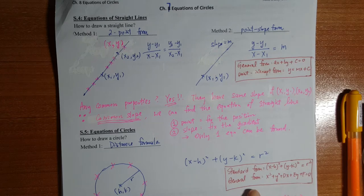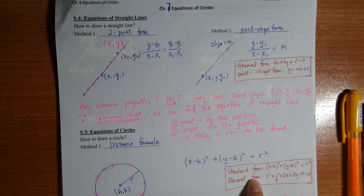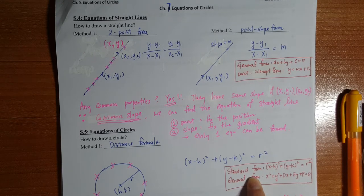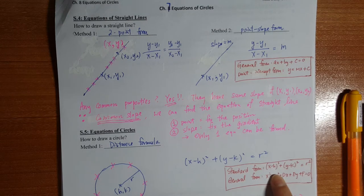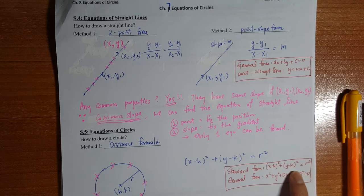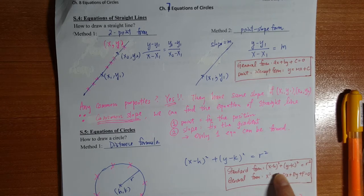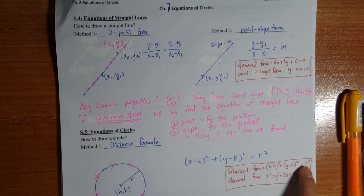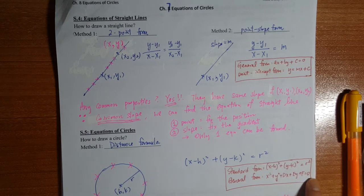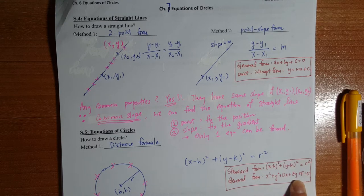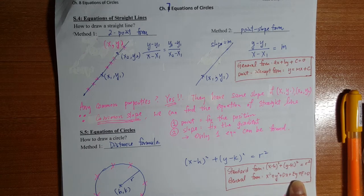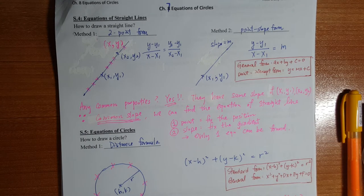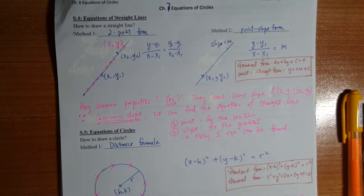So same as the equation of circle. In this chapter, you can have two forms as well. So the standard form would be like this, you just keep the distance formula. And then the second one would be in the general form. That means you expand it, you simplify it, you put one side equals to zero. So this one would be the general form. So let's go to our notes page four.